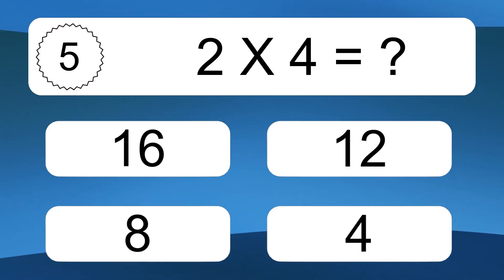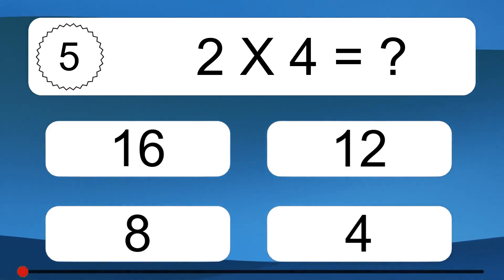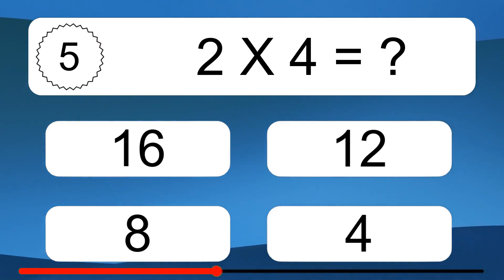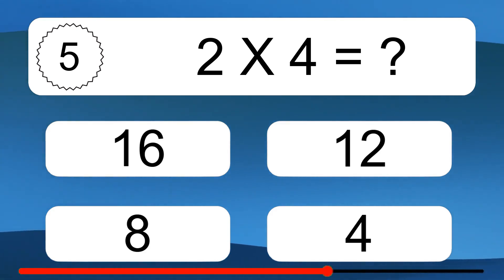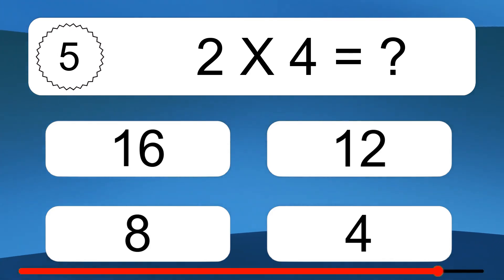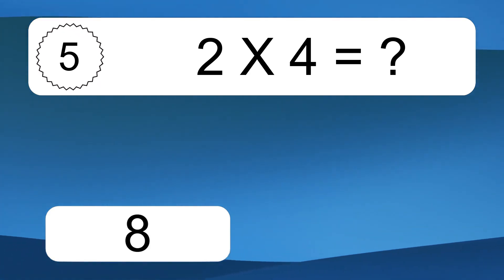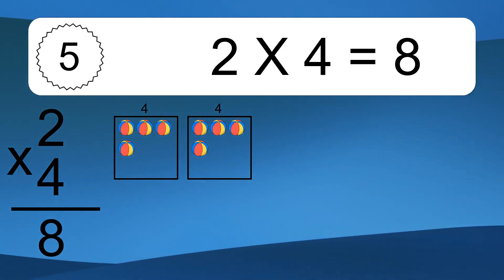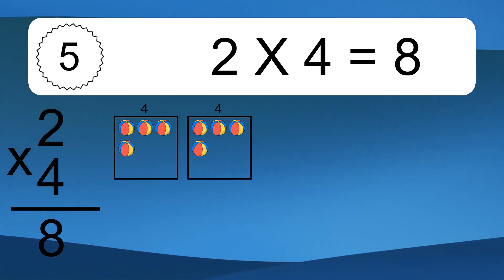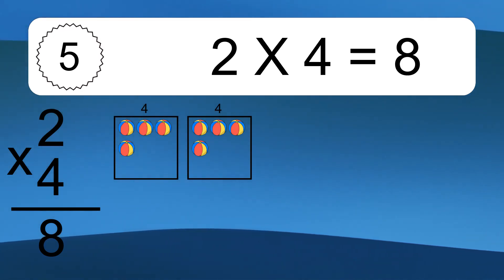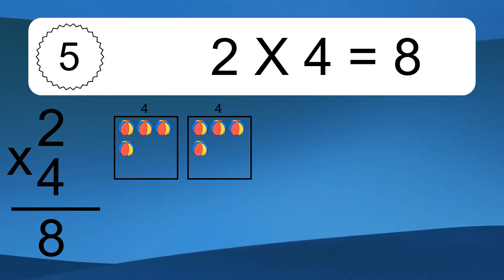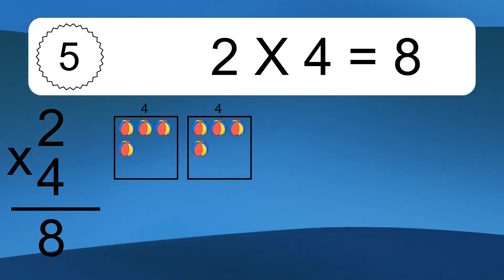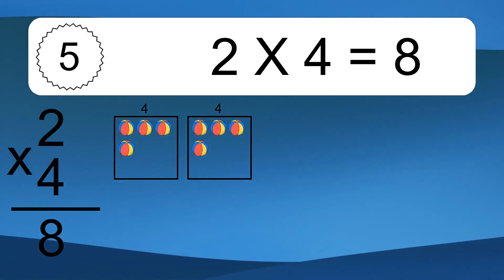2 times 4 equals what? 2 times 4 equals 8. We have 2 boxes, and each box has 4 colorful balls inside. If you count all the balls in all the boxes together, you will have 2 times 4 balls. This equals 8 balls.